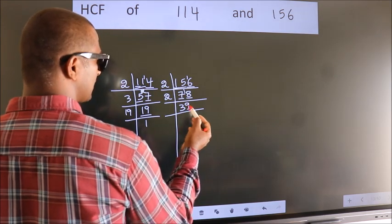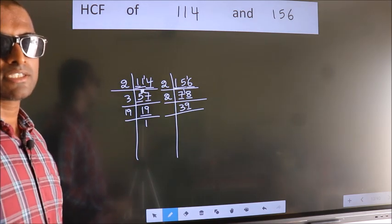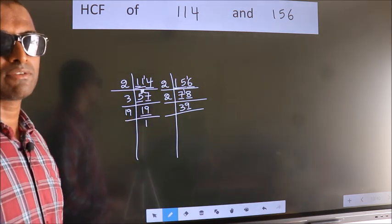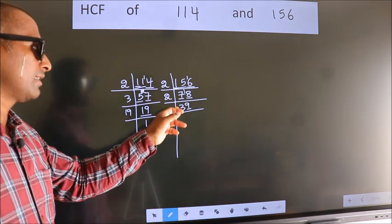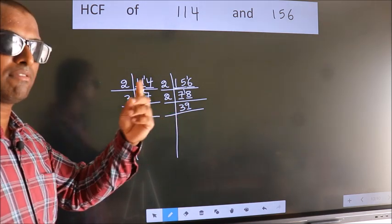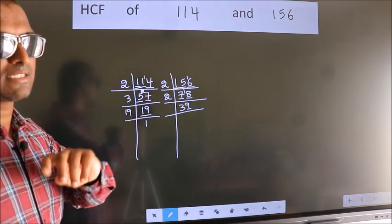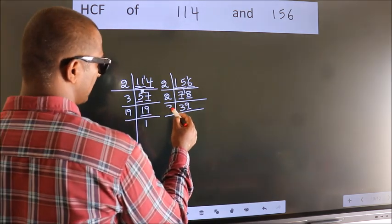Now, last digit 9, not even. So this number is not divisible by 2. Next, prime number 3. To check divisibility by 3, for that we should add the digits. 3 plus 9, we get 12. Is 12 divisible by 3? Yes. So this number also divisible by 3. So take 3.